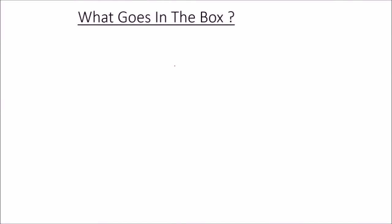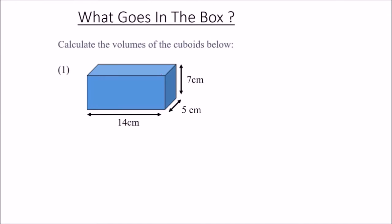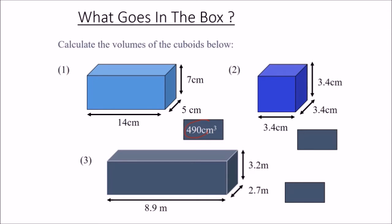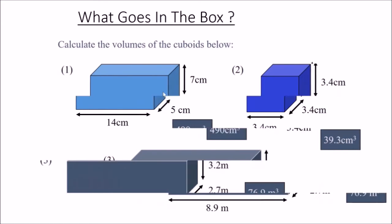Let's calculate the volumes of cuboids. 10 into 5 into 7 gives 490. Another example: 8.9 into 2.7 into 3.2 gives 76.9 meter cube.